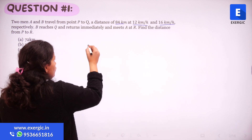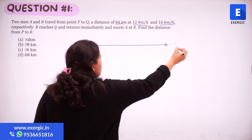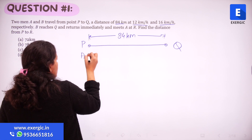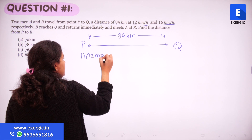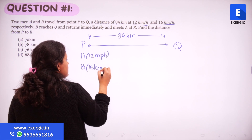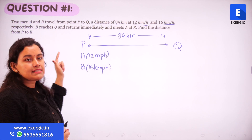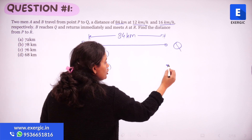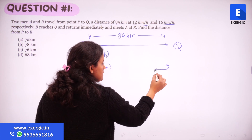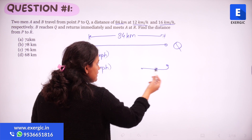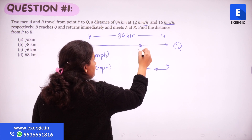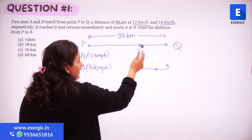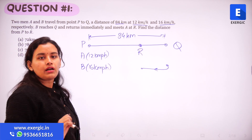We have two points P and Q with a total distance of 84 km. Person A travels at 12 km/h and person B at 16 km/h — they start from P towards Q at the same time. Since B has higher speed, B reaches Q first, makes a U-turn, and while returning from Q to P, meets A at point R. We want to find that distance PR.